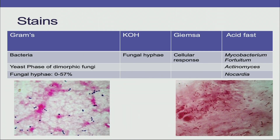The most important stain for bacterial keratitis or any microbial keratitis is KOH, which will immediately tell you whether to start antifungal therapy. Apart from this, Gram stain is done, and in recalcitrant cases, acid-fast stain is done. Acid-fast is done for MAN — mycobacteria, actinomyces, and Nocardia.